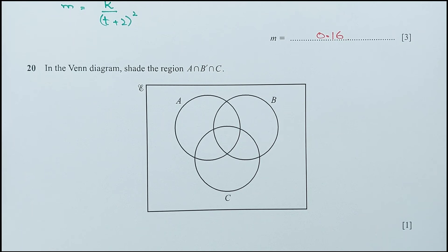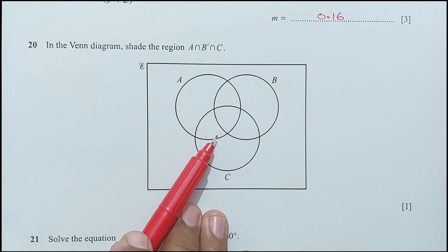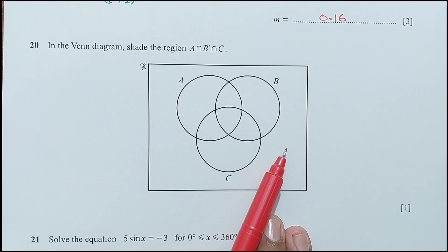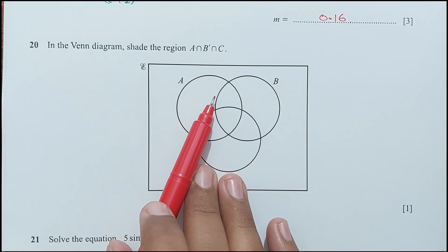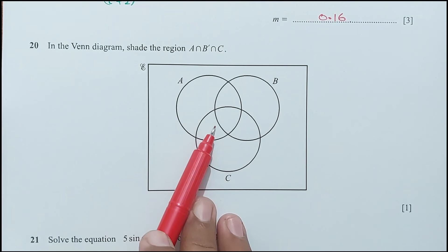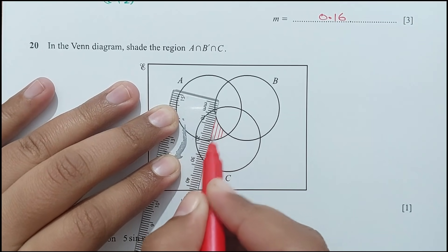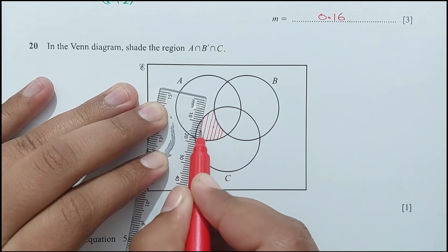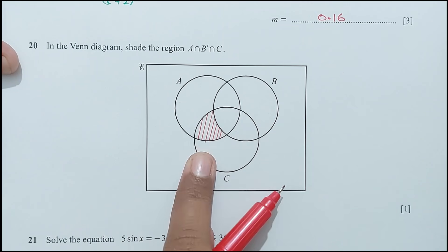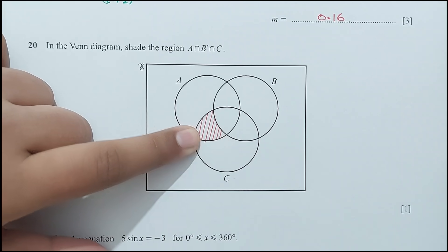Question number 20: shade the region for the set (A ∩ B') ∩ C. B complement is the region outside of B. Intersecting with A gives only the part of A outside B. Then intersecting with C gives only the region inside A, outside B, and inside C — that is the shaded region.